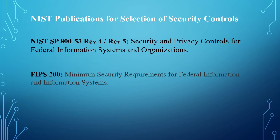The next step is to select the applicable security controls to secure the moderate impact system. There are two publications used to select the applicable security controls for low, moderate, and high impact systems. These publications are NIST 800-53 Rev 4 or NIST 800-53 Rev 5. NIST 800-53 Rev 5 was recently approved; however, most government agencies and organizations are still using NIST 800-53 Rev 4 as their control baseline. This publication has the security and privacy controls for federal information systems and organizations, and provides guidelines for selecting and identifying security and privacy controls.